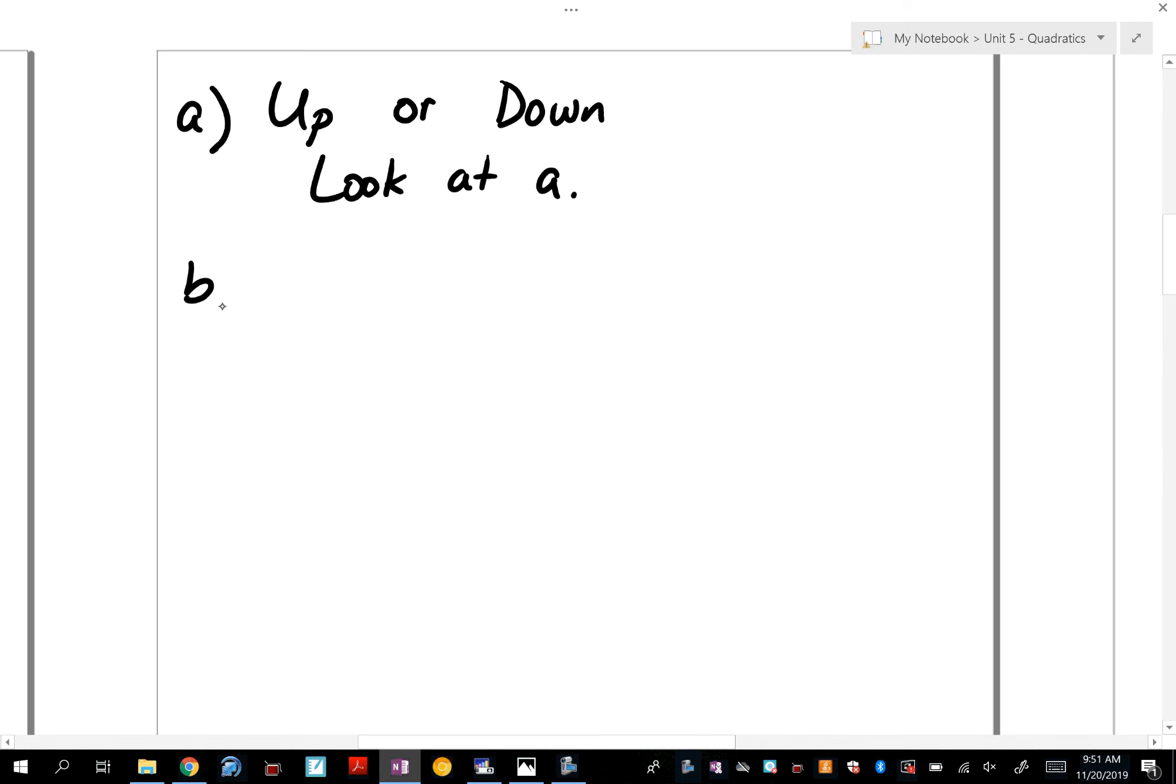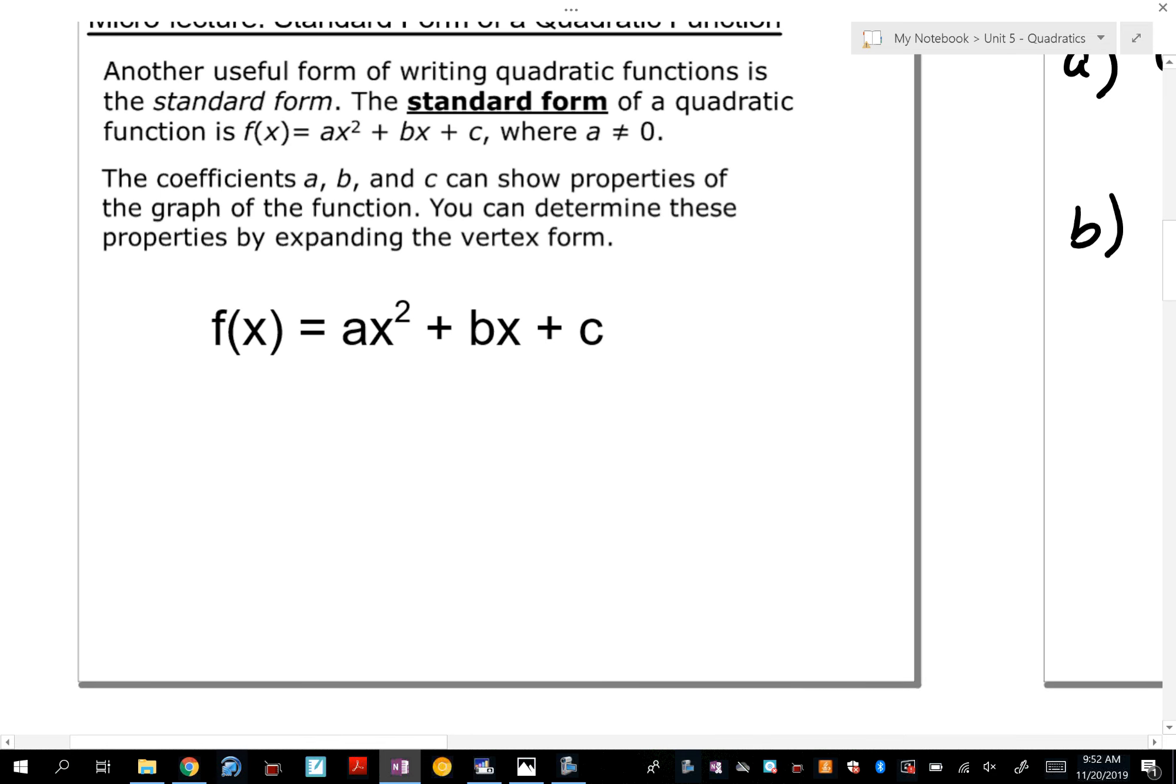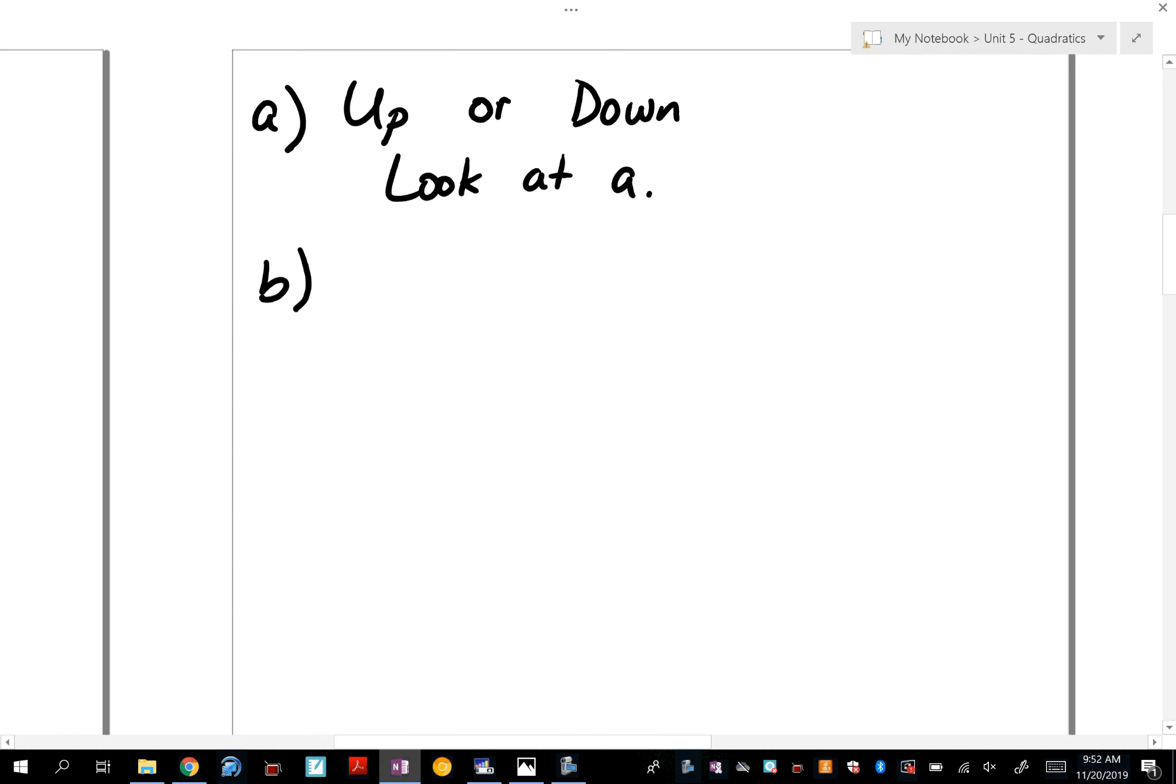Now, after we determined if it goes up or down, what was the second thing we found with vertex form? Very good, Alondra. The axis of symmetry. Do you remember, Alondra, how to find it for vertex form? What was the last one? X equals h. Very good. It's x equals h. Now, unfortunately, with standard form, it's not just x equals a letter. You'll notice we didn't have any h's. All right? So it's not going to be that. It's actually a lot more confusing. You find the axis of symmetry as x equals the opposite of b over 2a.